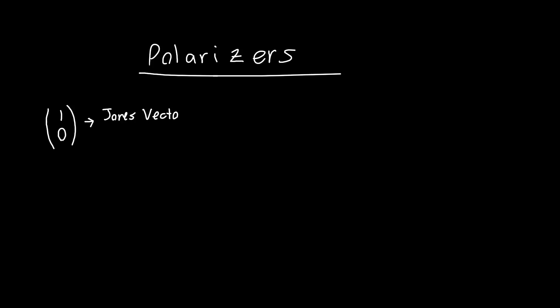This is the Jones vector for x polarized light. So if this is our x axis which is horizontal, this is our y axis, and this is our z axis, this vector represents an electric field pointing in the x direction.